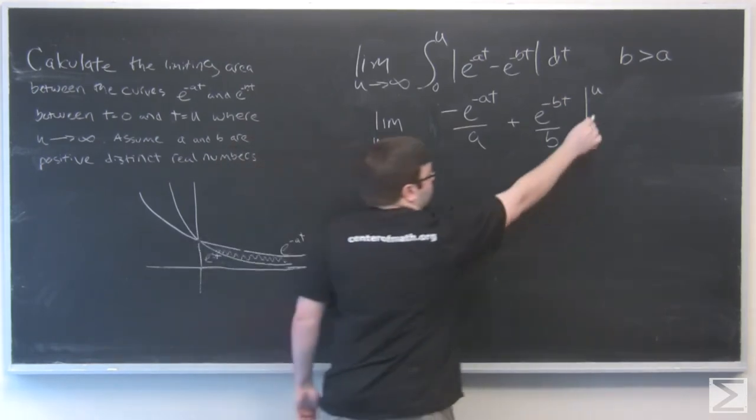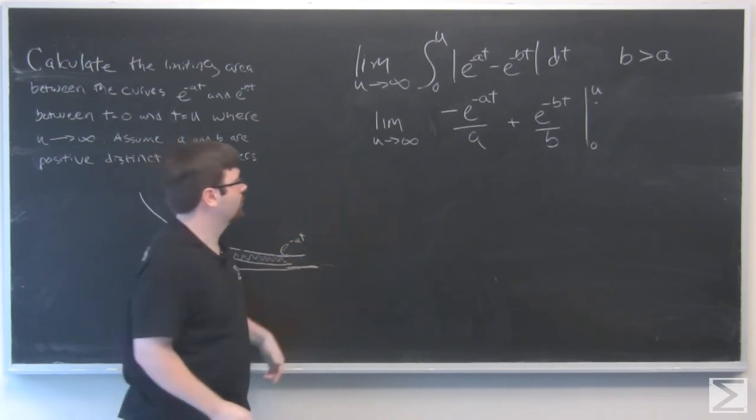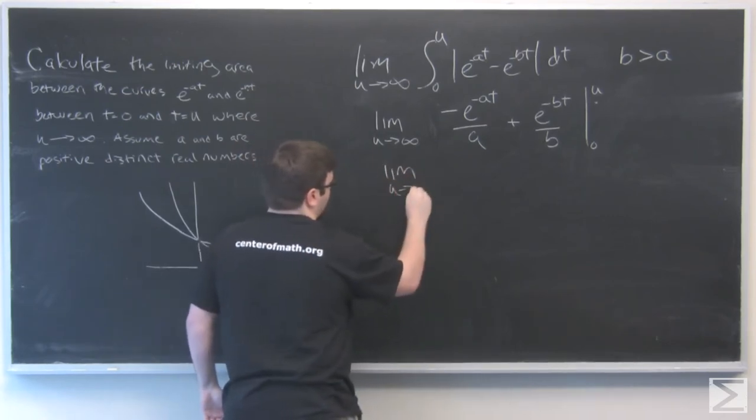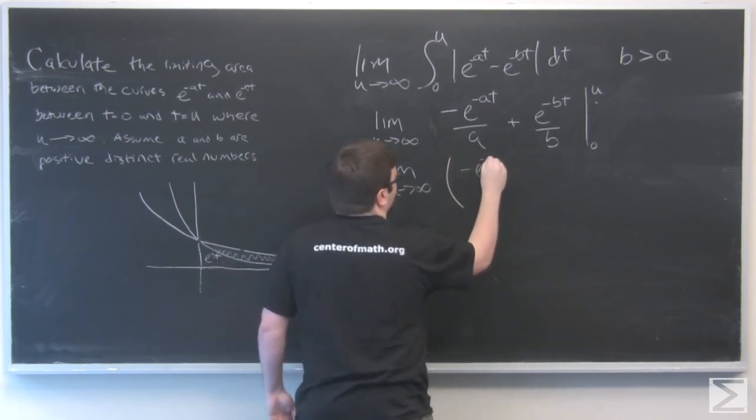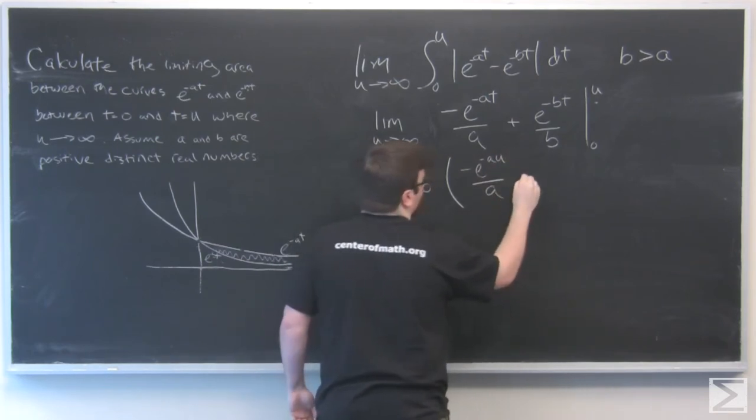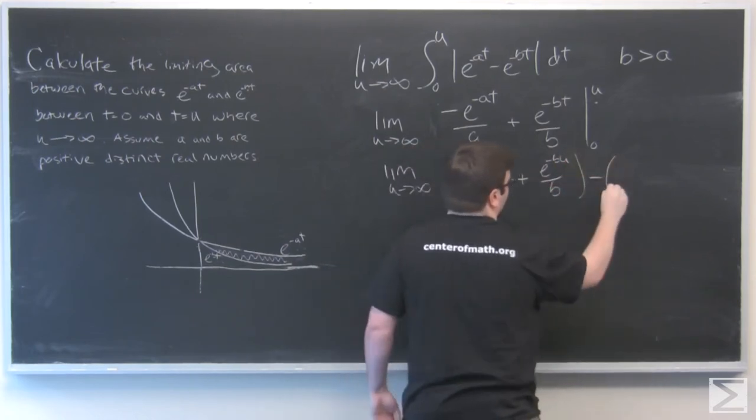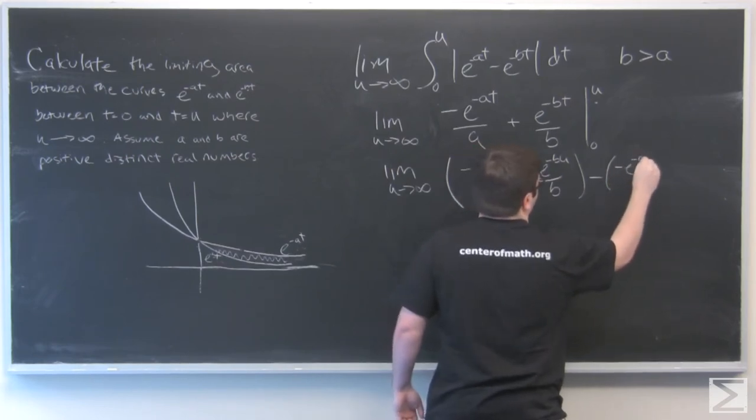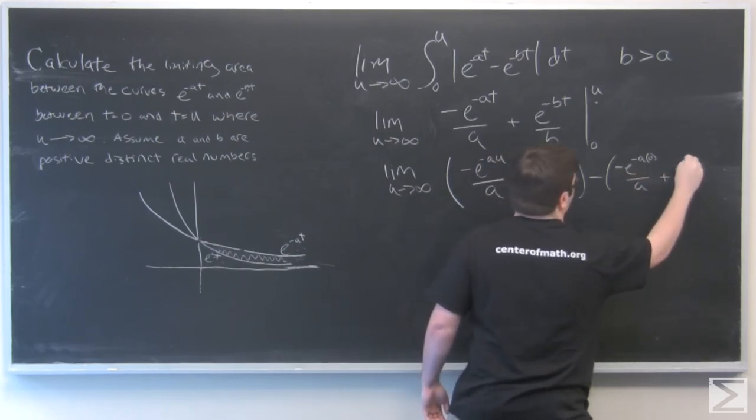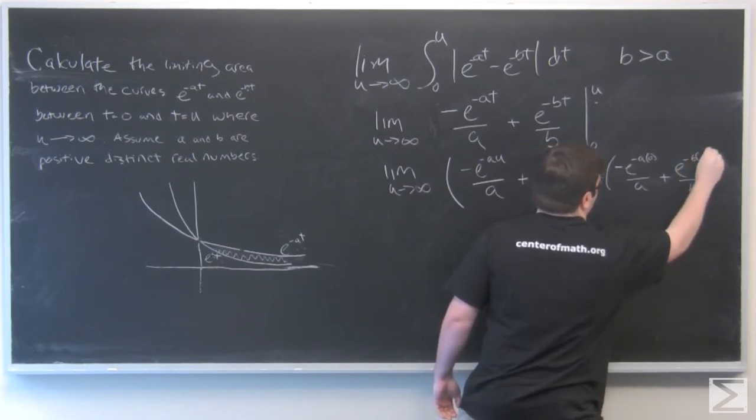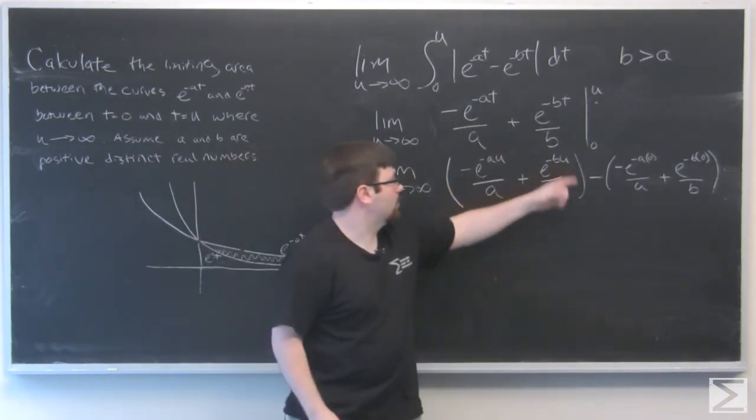So plugging in our limits here, which are u and zero, we plug in our u and our zero.